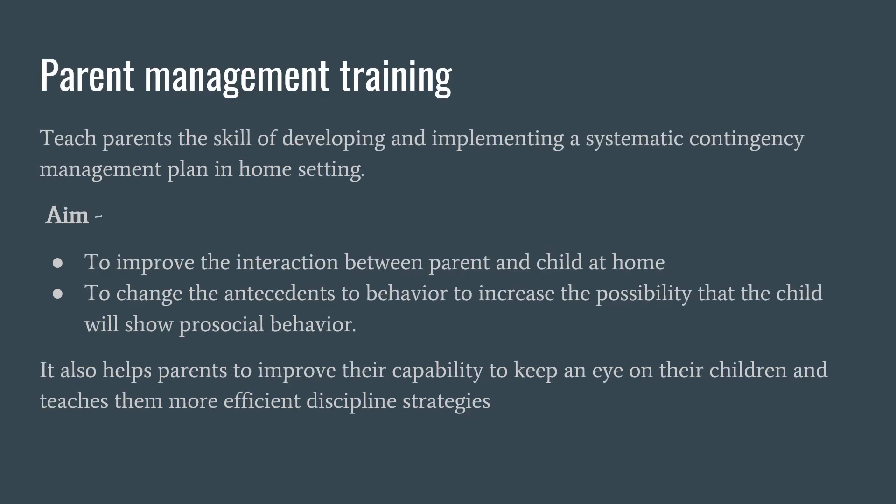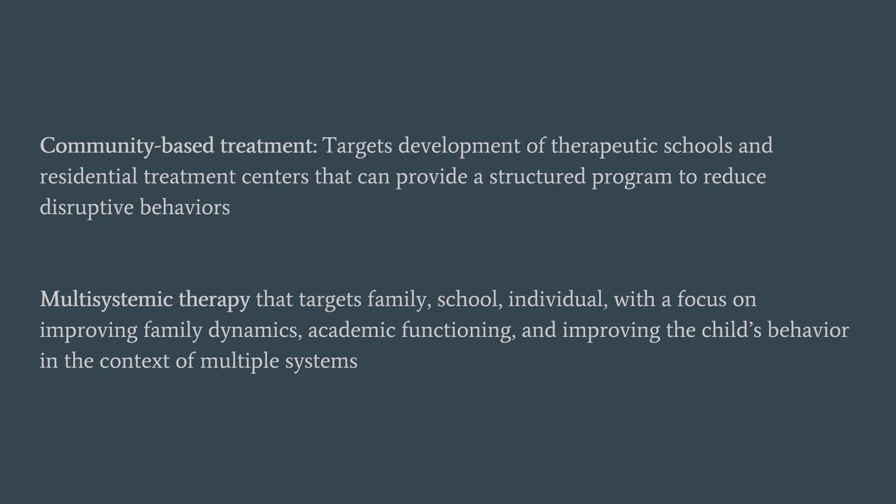Parent Management Training: Parents are taught the skills of developing and implementing a systematic contingency management plan in the home setting. The aim is to improve the interaction between the parent and the child at home, to change the antecedents of the behavior, and to increase the possibility that the child will show prosocial behavior. It also helps parents improve their capability to monitor the child for proper supervision and teaches them more effective discipline strategies. Treatment can also be community-based or multisystemic therapy. Community-based treatment targets the development of therapeutic schools and residential treatment centers which provide a structured program to reduce disruptive behaviors. Multisystemic therapy targets the family, school, and individual holistically, with a focus on improving family dynamics, academic functioning, and the child's behavior across the various systems in which the child is involved.